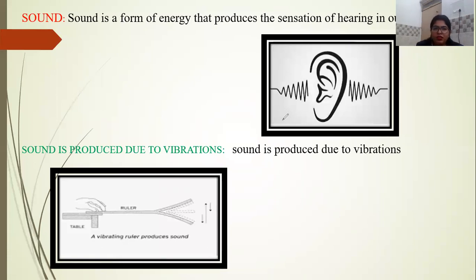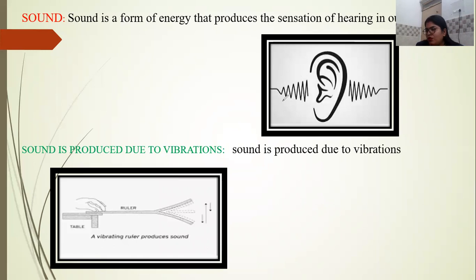In our daily life we hear different types of sounds — sound of a bird, sound of a bell, sound of a horn. Different persons have different voices, and different animals also produce different sounds. So sound is a form of energy that produces the sensation of hearing in our ears.